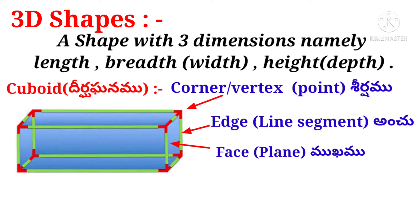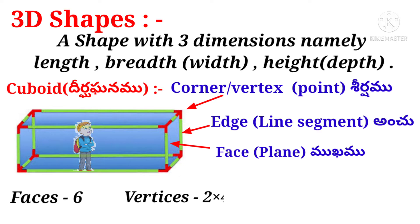Suppose a boy entered a room which is in the shape of a cuboid. He observed four walls — that is four faces — and one ceiling face and one flooring face: total six faces. He observed four corners in the flooring and four in the ceiling, that is four plus four equals eight vertices. He also noticed four edges in the flooring, four edges in the ceiling, and four edges joining the corners of the flooring and ceiling, so four plus four plus four equals twelve edges.